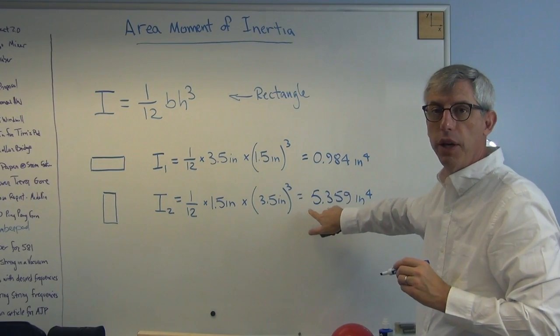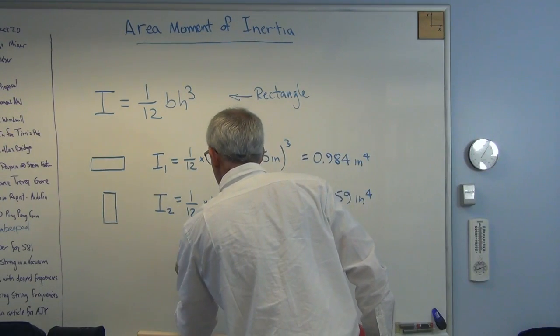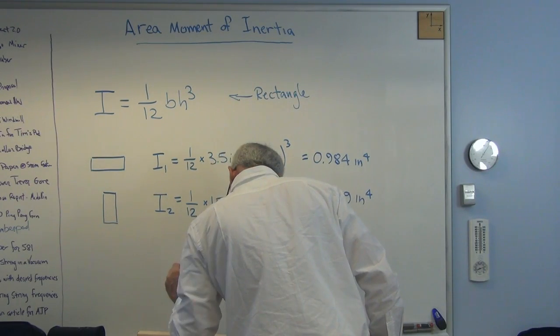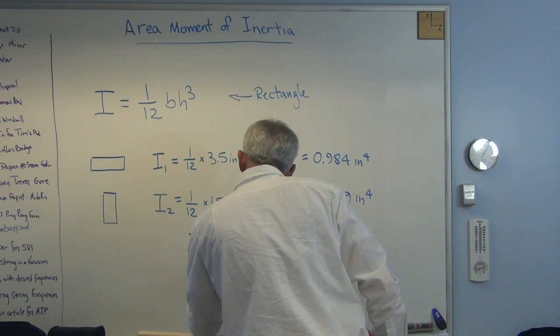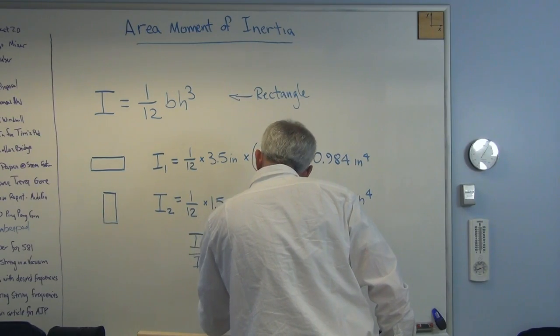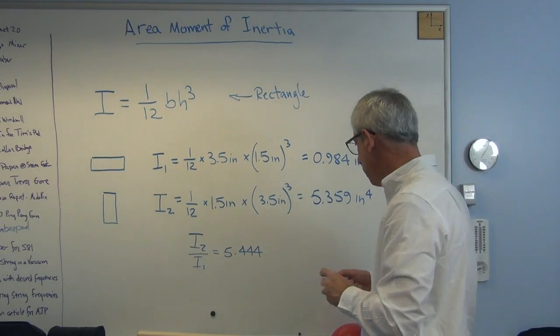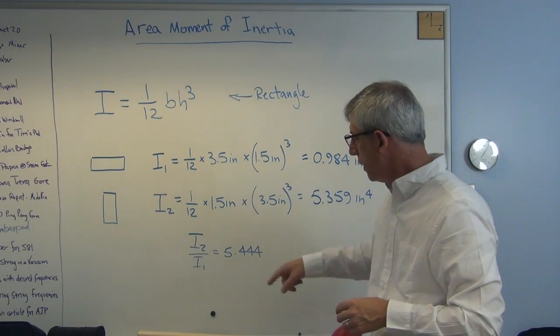Big, big, big change in stiffness. The ratio of I2 to I1 is 5.444. So I get to multiply stiffness by a factor of 5.4.